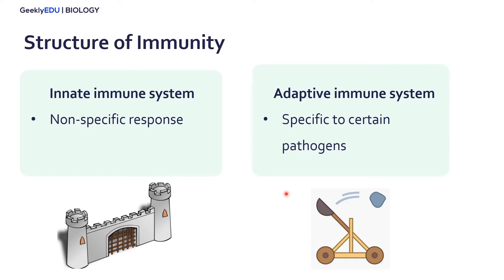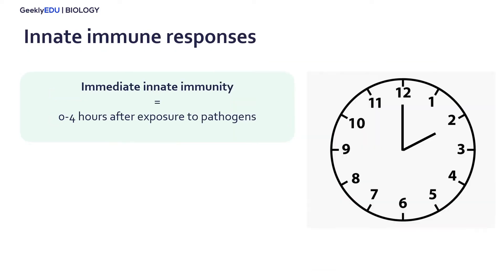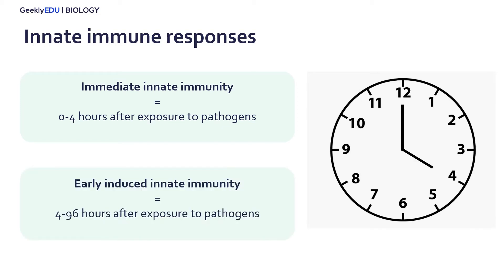In today's video, I'm just going to discuss elements of the innate immune system. Our innate immune response is composed of two different types of innate immunity. The first is the immediate innate immunity, which occurs zero to four hours after exposure to diseases or pathogens. The second is the early induced innate immunity, which happens from four to 96 hours after exposure. For today's video, we are just going to discuss the immediate innate immune response.